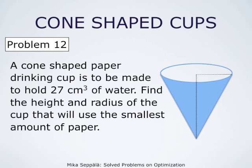A cone-shaped paper cup is to be made to hold 27 cubic centimeters of water. Our task is to find the height and the radius of the cup that will use the smallest amount of paper.